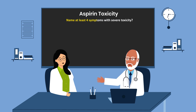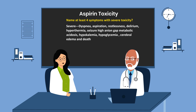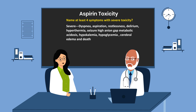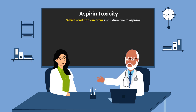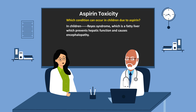Name at least four symptoms with severe toxicity. Severe toxicity may result in dyspnea, aspiration, restlessness, delirium, hyperthermia, seizure, high anion gap metabolic acidosis, hypokalemia, hypoglycemia, cerebral edema, and death. Which condition can occur in children due to aspirin? In children, Reye's syndrome, which is a fatty liver, prevents hepatic function and causes encephalopathy.